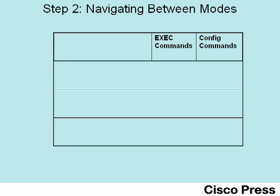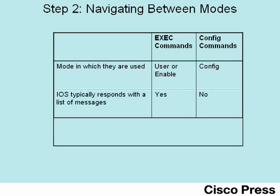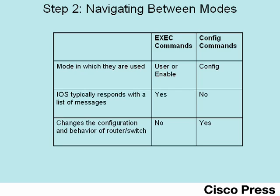While moving between the modes may be relatively simple, it's hard to really understand what these modes are for until you see lots of examples. Before we do that, let's consider the types of commands you would use in each mode. There are two main styles: exec commands and configuration commands. Exec commands are only used in user or enable mode, whereas configuration commands are only used in config mode. When you type an exec command, you expect iOS to give you some messages back — typically displaying information about what the router is doing. Config commands don't give messages in return, but they tell the router how to behave, such as which interfaces to use, IP addresses, or routing protocols, thereby changing the router's configuration.